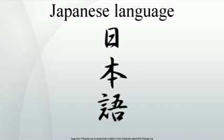Negatives are formed by inflecting the verb. For example, pan wo taberu (I will eat bread) becomes pan wo tabenai (I will not eat bread). Plain negative forms are actually i-adjectives and inflected as such; for example, pan wo tabenakatta (I did not eat bread).